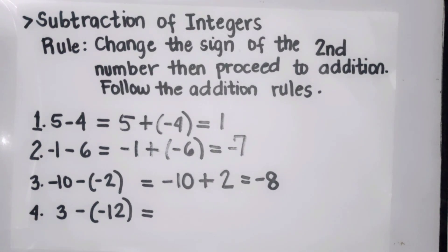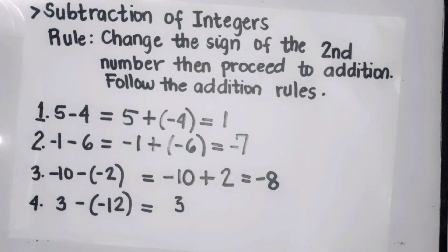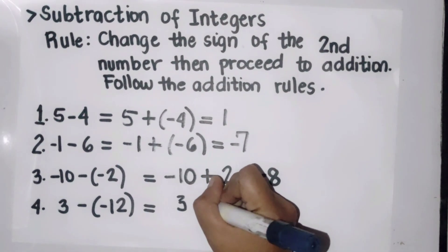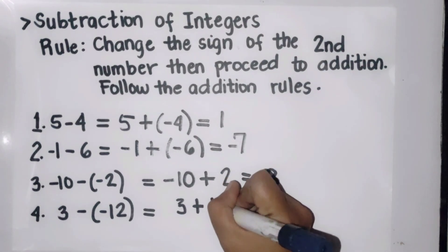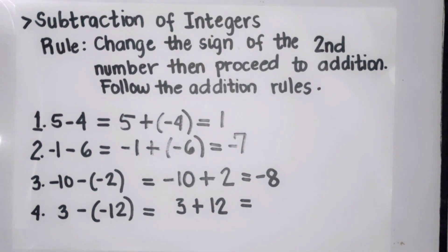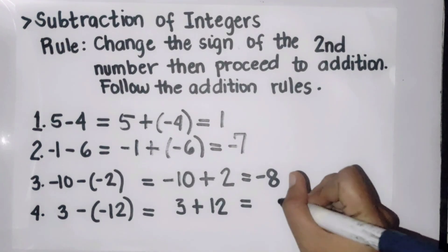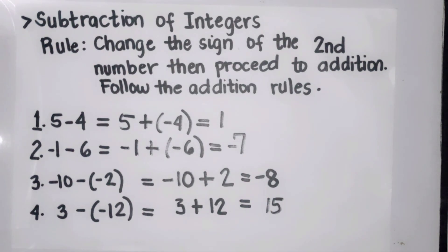Fourth example: three minus negative twelve. Copy three, proceed to addition, and change the sign of the second number — negative twelve becomes positive twelve. They are both positive, so add: three plus twelve is fifteen. Since they are both positive, our answer is also positive fifteen.